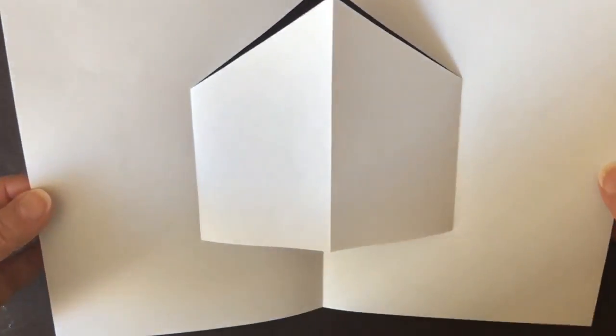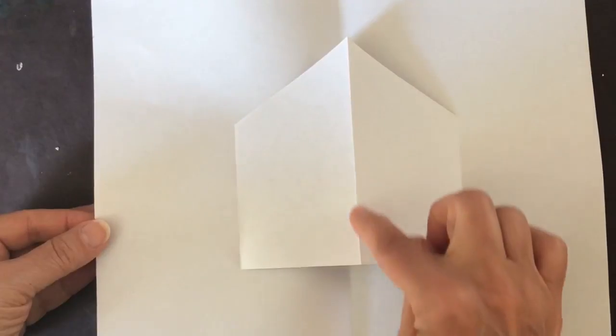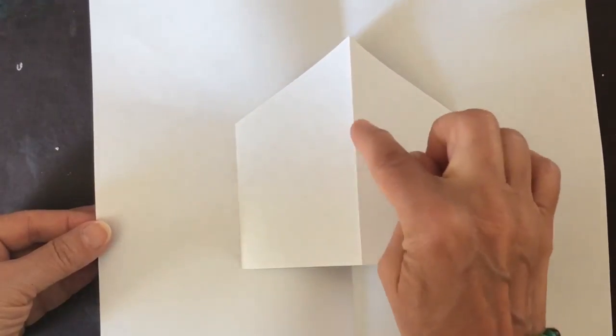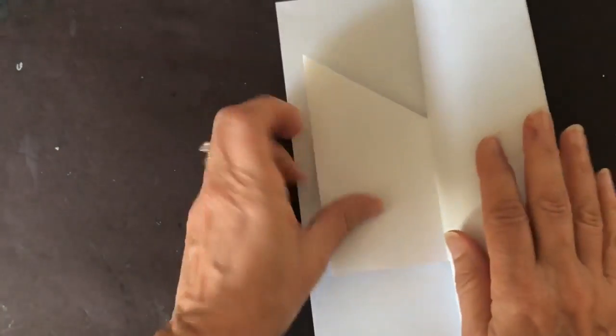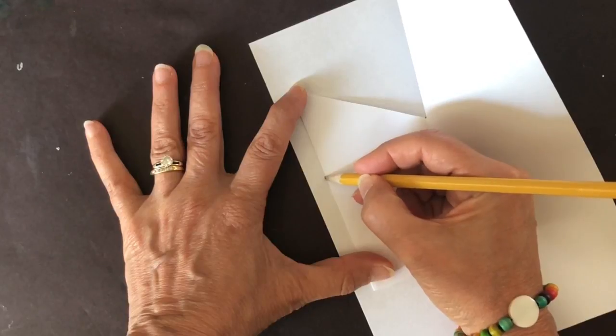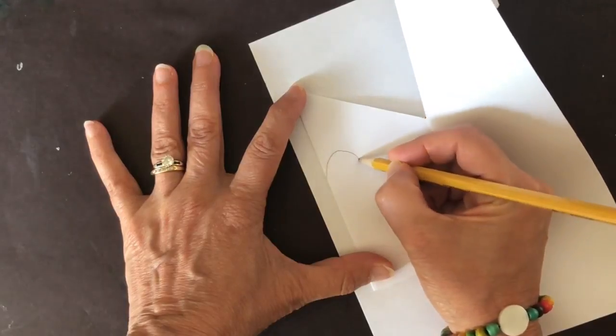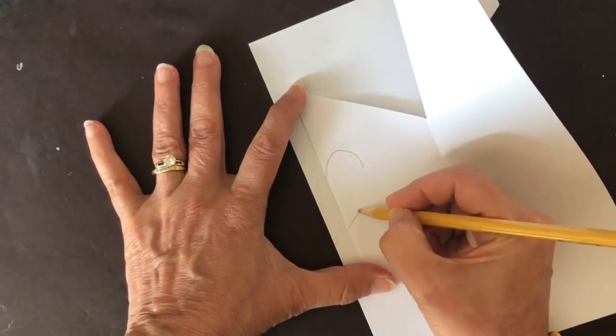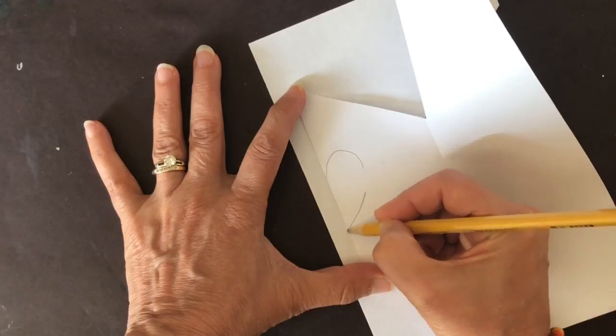This can be kept very simple or we can continue doing another pop-out on this fold. In this case, I'm going to flip it over and do a heart right in the middle, drawing just the top rainbow, stopping and drawing the bottom diagonal.